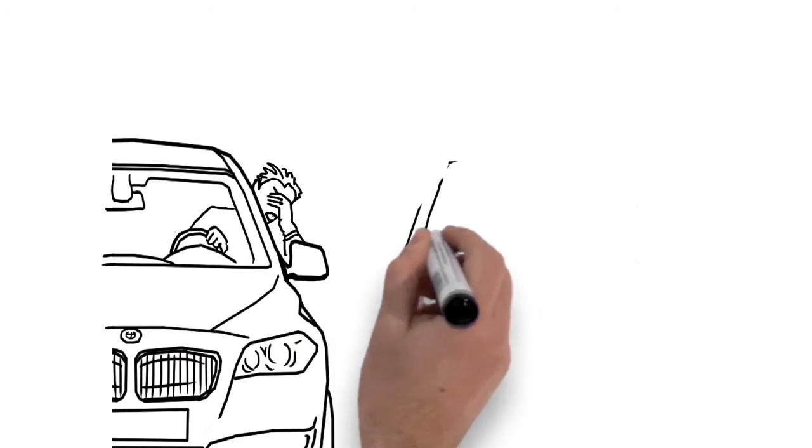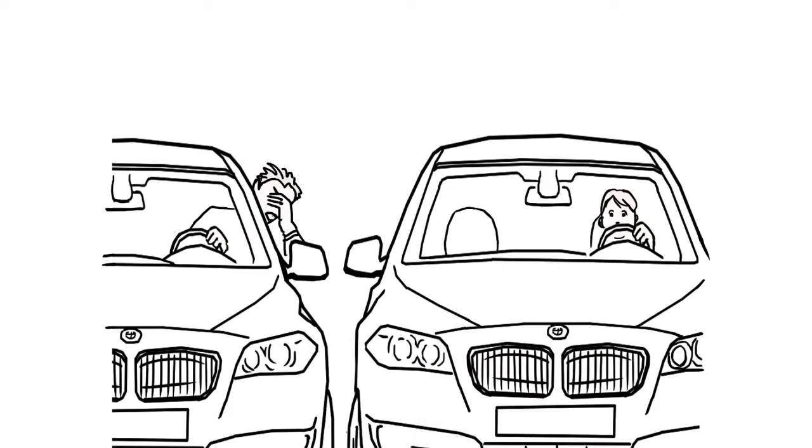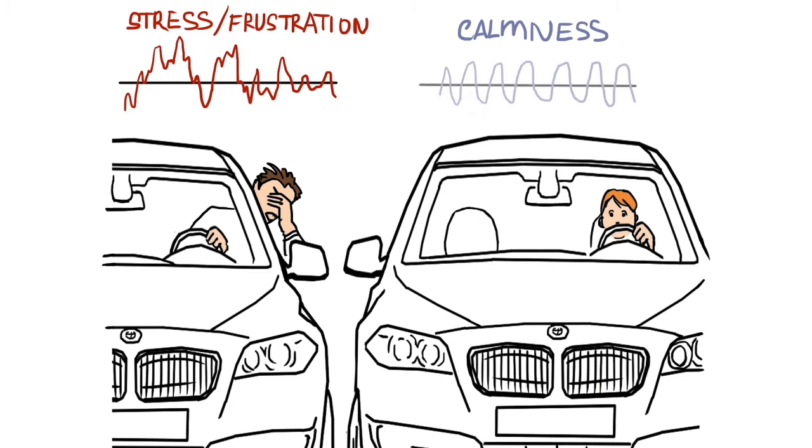Emotions such as frustration, impatience, and anxiety deplete our energy reserves and show up on a computer monitor as an irregular, disorganized HRV pattern.